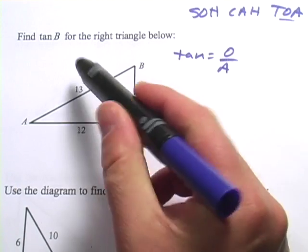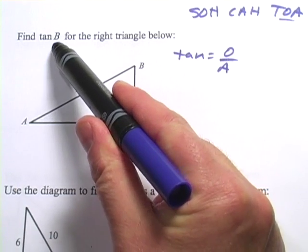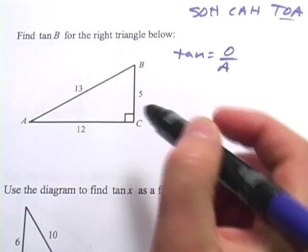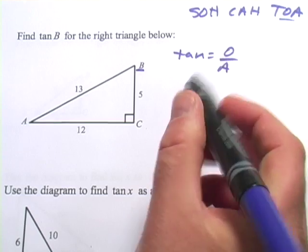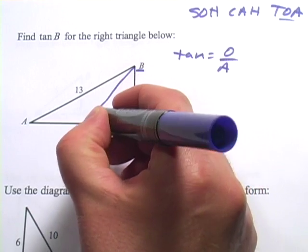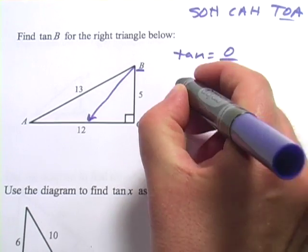So in this triangle, it says find tangent of B for the right triangle below. So here's B, this is our perspective. We want the opposite side from B. That's going to be this one, so that's 12 on the top.